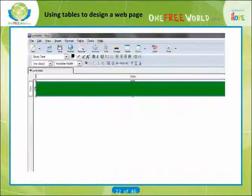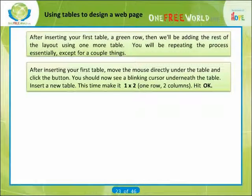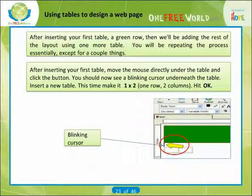Also, go ahead and make the borders, spacing, and padding all set to zero. Next, change the background color by selecting the box next to it and select a green color by moving the mouse over a green color and clicking it. Then click OK. Now go back and look at your screen — you will see something that now looks like a green row. Congratulations, you've inserted your first table. After inserting your first table, we'll be adding the rest of the layout using one more table. After inserting your first table, move the mouse directly under the table and click.